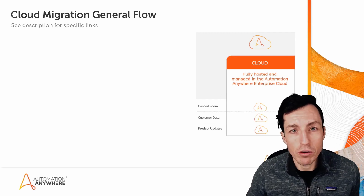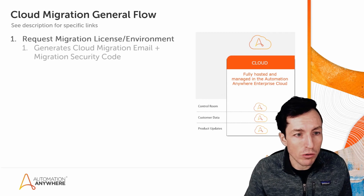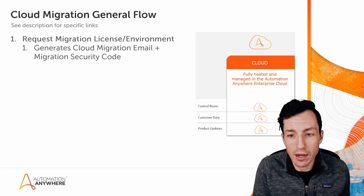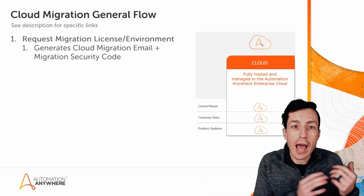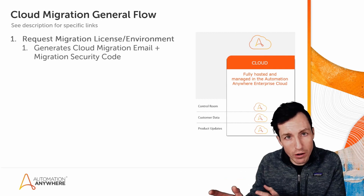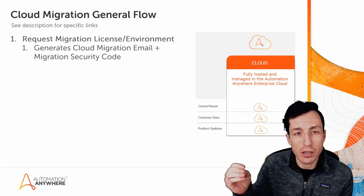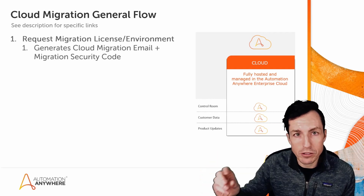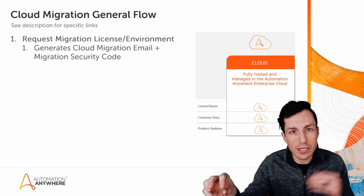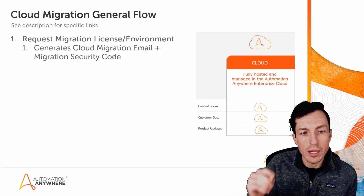Looking at the cloud migration general flow: your first step is to request that migration license and environment, which generates a temporary license you can use in A360 as you migrate from v11. The general process is to migrate everything over first, then start migrating your actual bots — that's a slightly separate process. Once migrated, you check those bots, and as they become fully functional and reliable you run them in A360 and take them off your v11 or v10 scheduling.